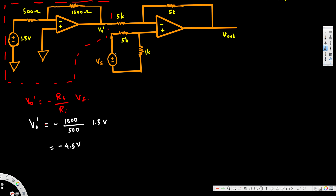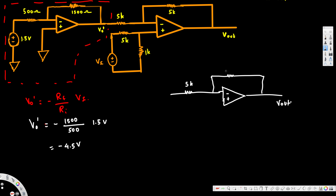After we find Vout prime, we can redraw the circuit. The redrawn second stage has a 5k resistor on the input, then the op-amplifier with minus and plus terminals, a 5k feedback resistor, and we are interested in finding Vout. We also have a 5k and a 1k resistor along with a voltage source.